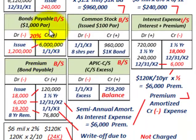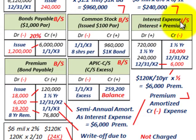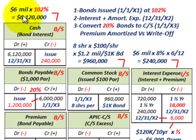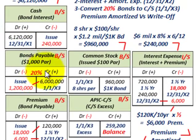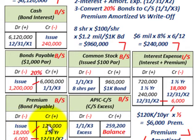Let's look at our accounts. We're going to set up bonds payable, there's going to be a premium on bonds payable, and it's going to be converted into common stock — at least 20% of these bonds. At the issue date, we had $6 million of bonds at 102%, which equates to $6,120,000. We debit cash for $6,120,000, credit bonds payable for $6,000,000 at par value, and credit the premium on bonds payable for $120,000.